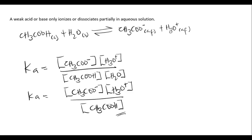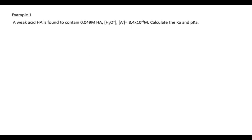Example number one: A weak acid HA is found to contain 0.049 molar of HA. The concentration of the hydrogen ion and A⁻ ions is equal to 8.4 × 10⁻⁴. We have to calculate the Ka and the pKa of this acid HA.